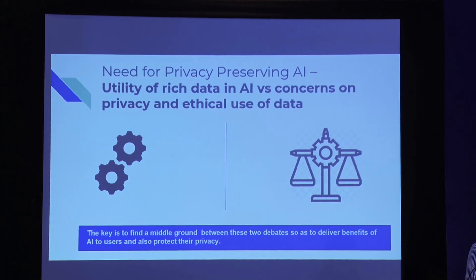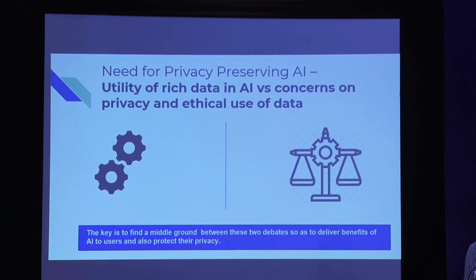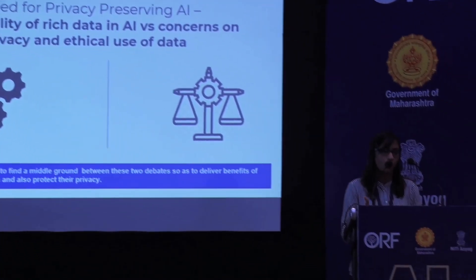On one hand, as individuals, we own and generate data that could potentially transform healthcare, education, and distribute resources more efficiently. For example, data on our diet, sleeping patterns, and geolocation data could help us build AI models and inform users about their habits — how to improve their diet, give them predictions and more meaningful insights. AI models require rich and granular quality data to give meaningful insights to users.